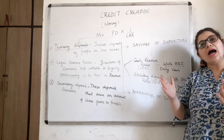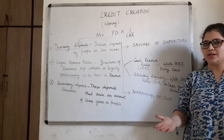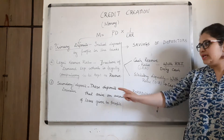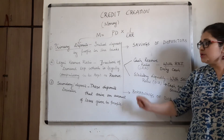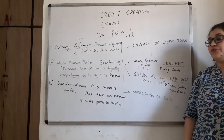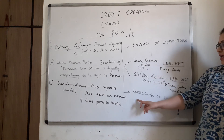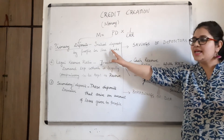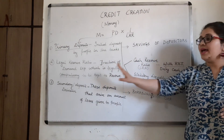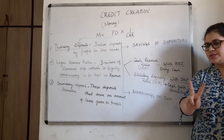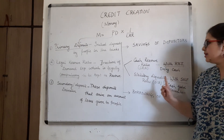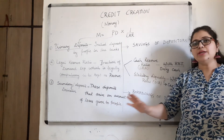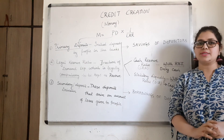Those 8,000 rupees that are given out as loans — those are called secondary deposits, or also known as derived deposits. These are deposits that arise on account of loans given to people — they represent the borrowings of depositors. So to recap: primary deposits are savings of depositors; LRR is the reserve money kept for emergencies with two components — CRR with RBI and SLR with the bank itself; and secondary deposits are the money given out further as loans.